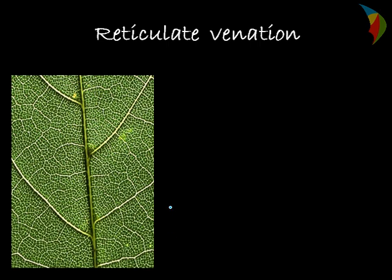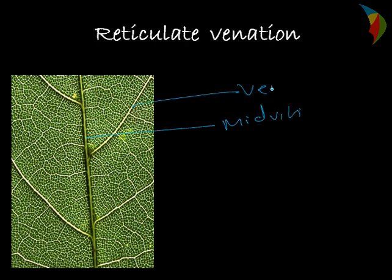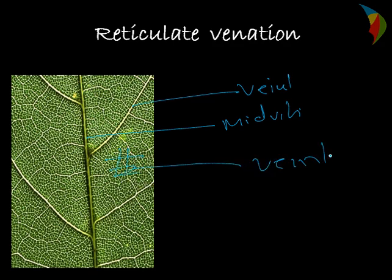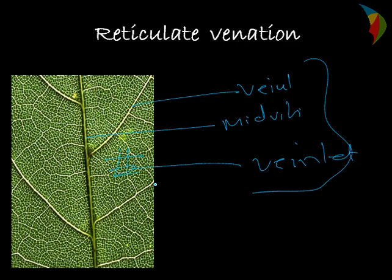Now you see the picture here. In reticulate venation, you can see the mid-rib. Then we have veins coming out from the mid-rib. And in between the main veins and the mid-rib, a lot of network is formed. This network is called veinlets. So this mesh which is formed on the surface of the lamina — this network formed by veins and veinlets — forms the reticulate venation.